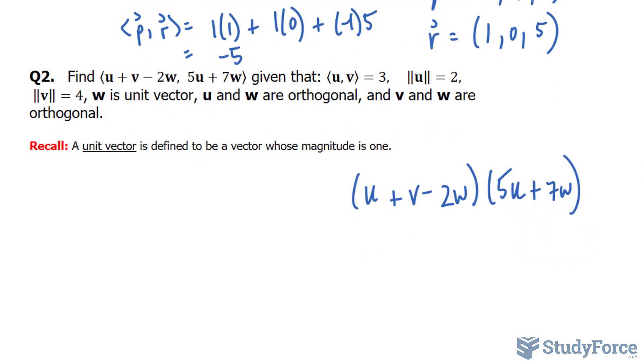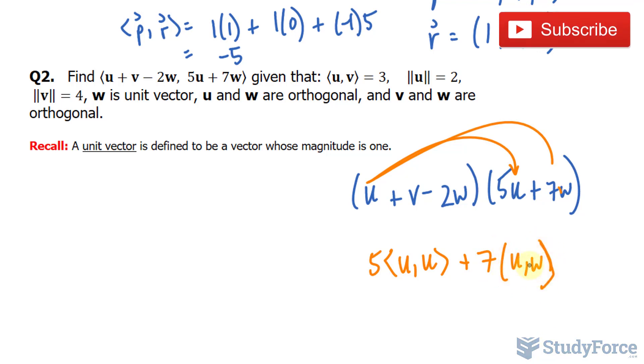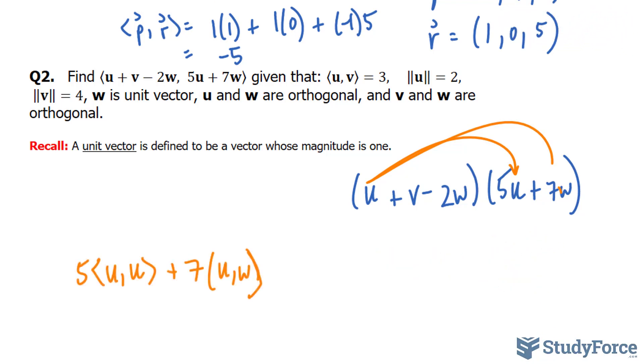We will expand this expression. We end up with 5 and the inner product of u and u. I multiply these two together, and I'll multiply u and 7w together. We get plus 7uw. The order of these two doesn't matter. And we do it again for v. v times 5u. We are using the distributive properties here.